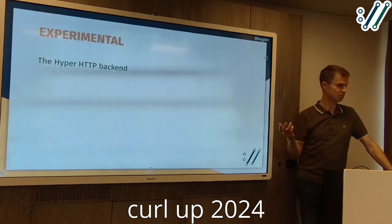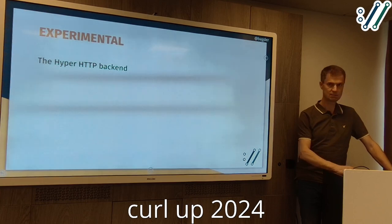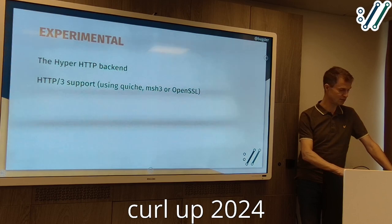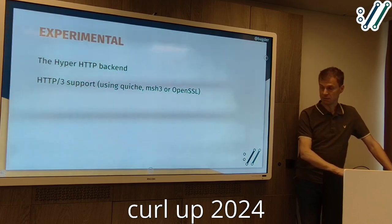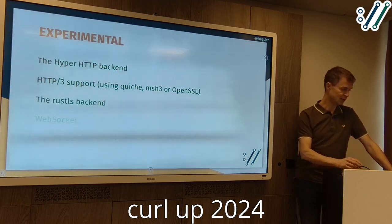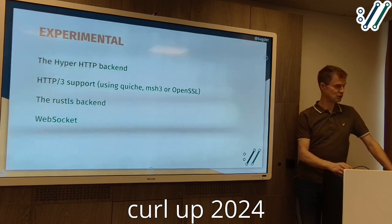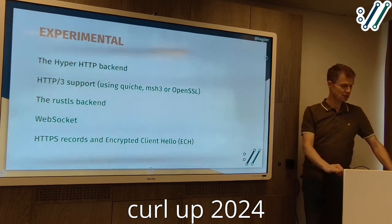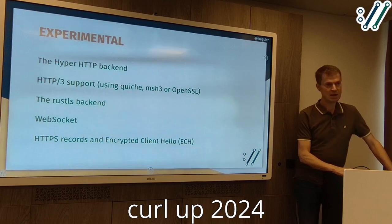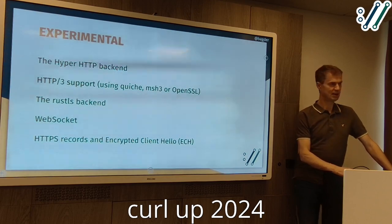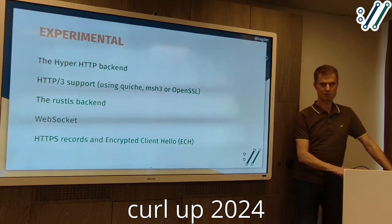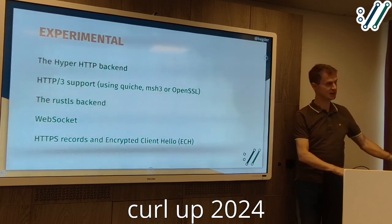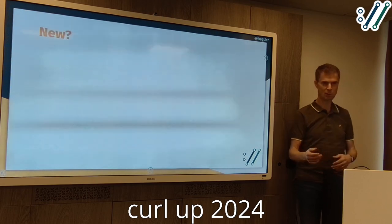How do we ever graduate these features? We don't really have a clear path for all of them. Some we do — like hyper, I talked about hyper recently. We also have the HTTP/3 backends — three of them. We have Russells, we have WebSockets. What do we need to do to get them moving? We just added ECH. Maybe we should define conditions for what's required for them to go out of experimental.